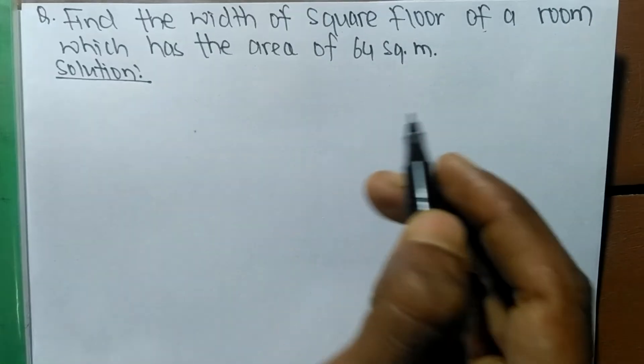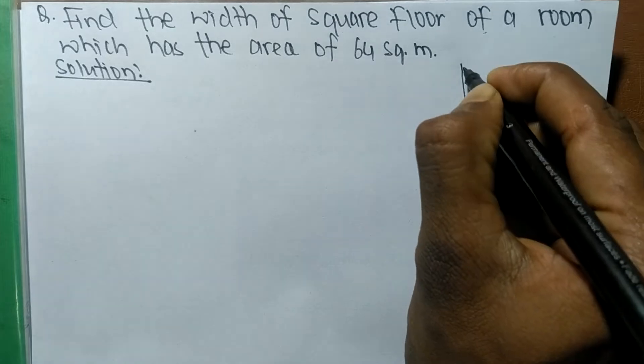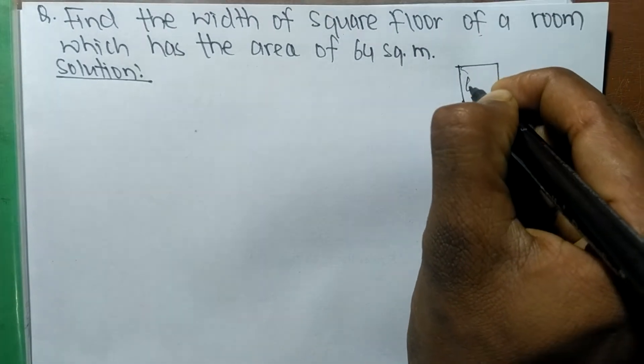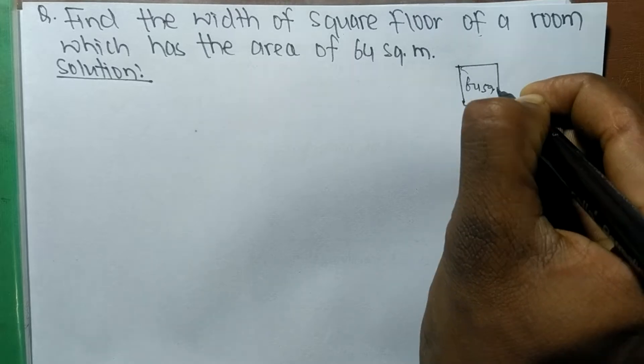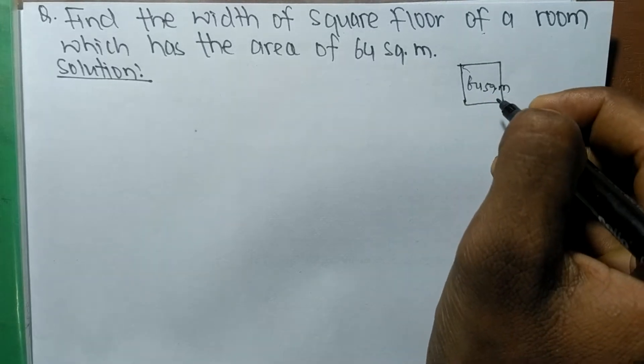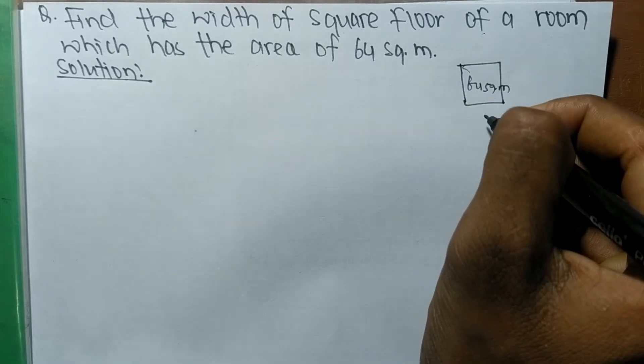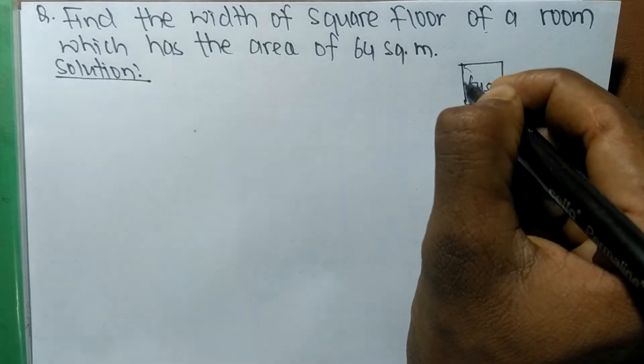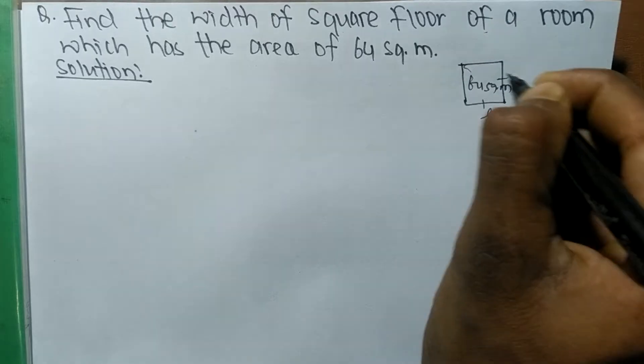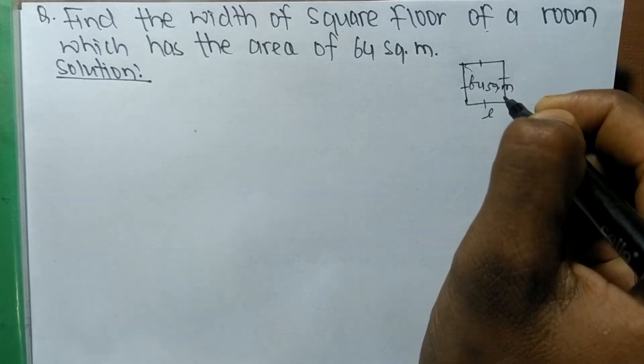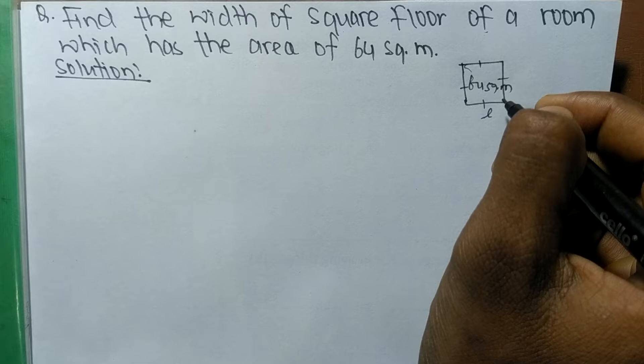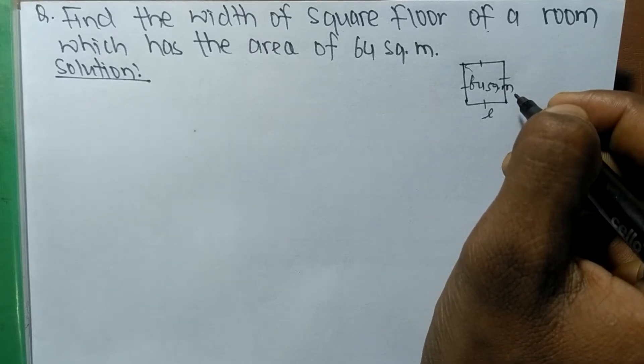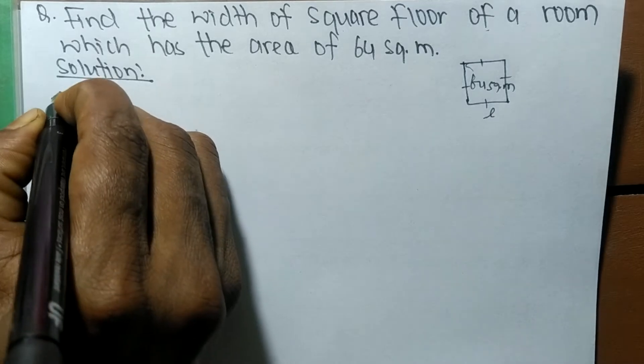So here is a square floor whose area is 64 square meter and we have to find out its width, means the length of its sides. When there is a square floor, all sides are equal, so to find out its width means the length of each side.